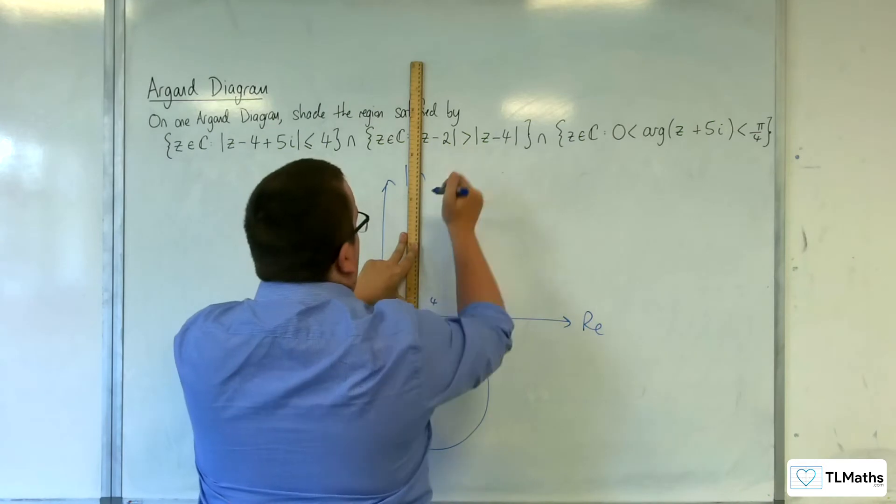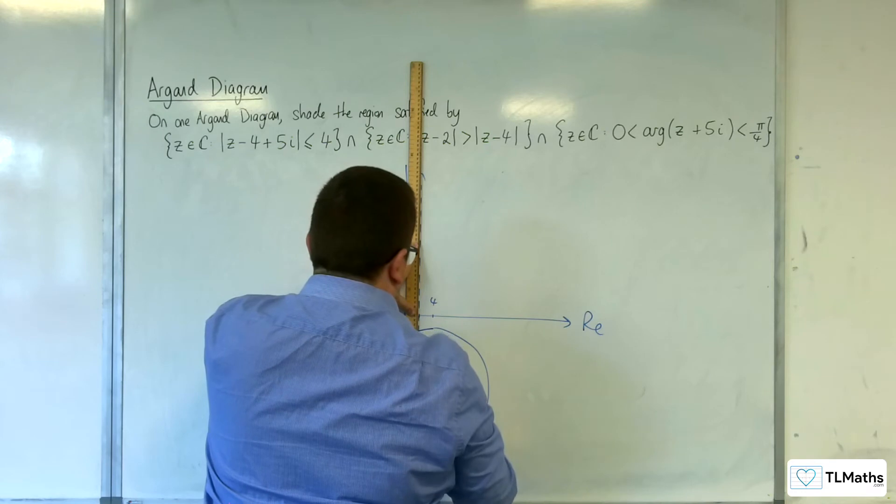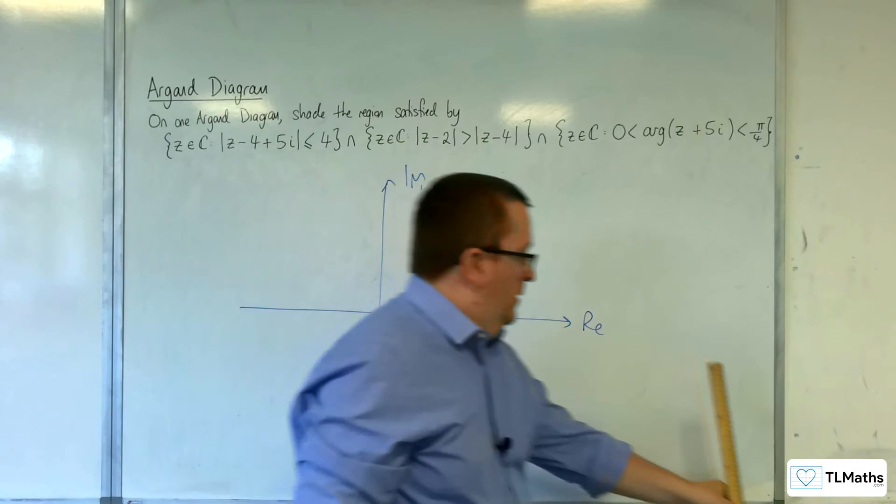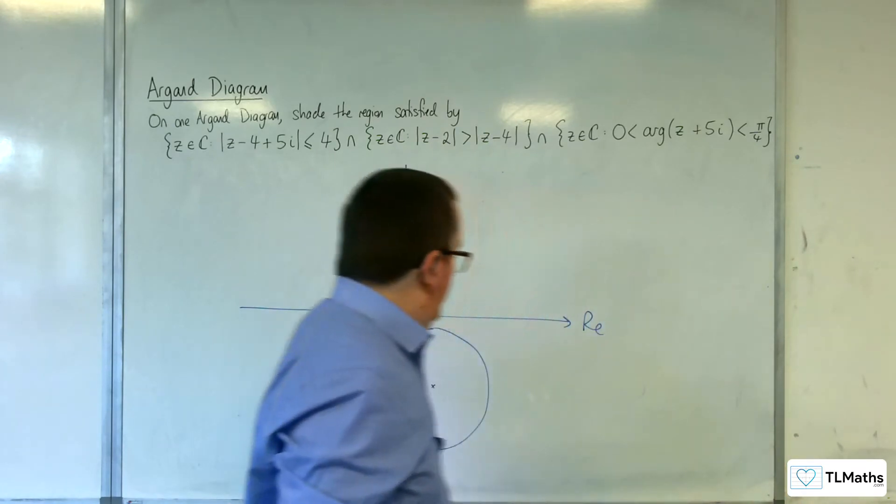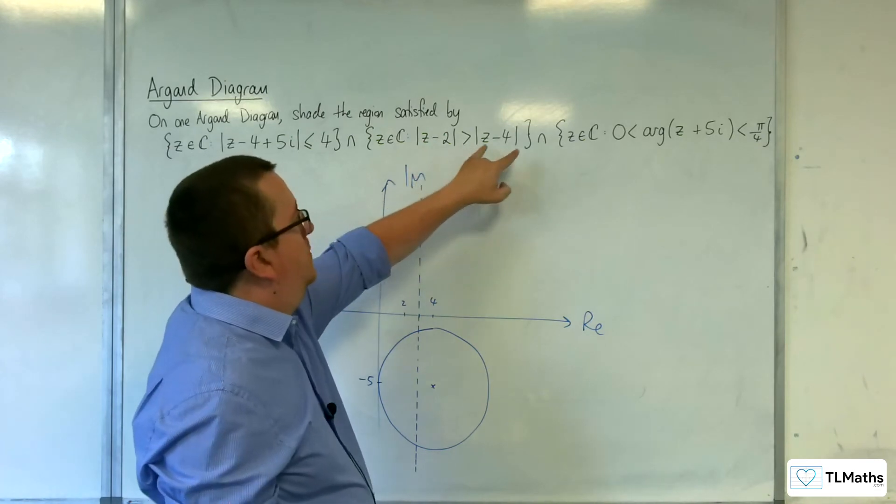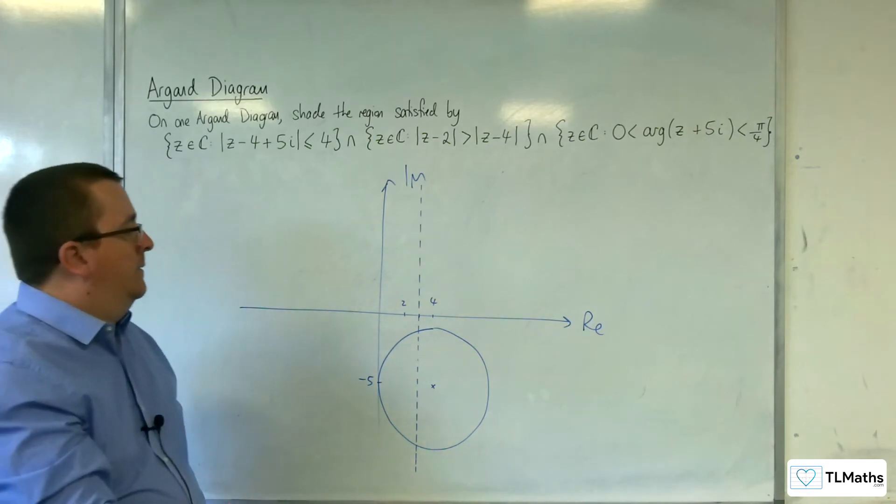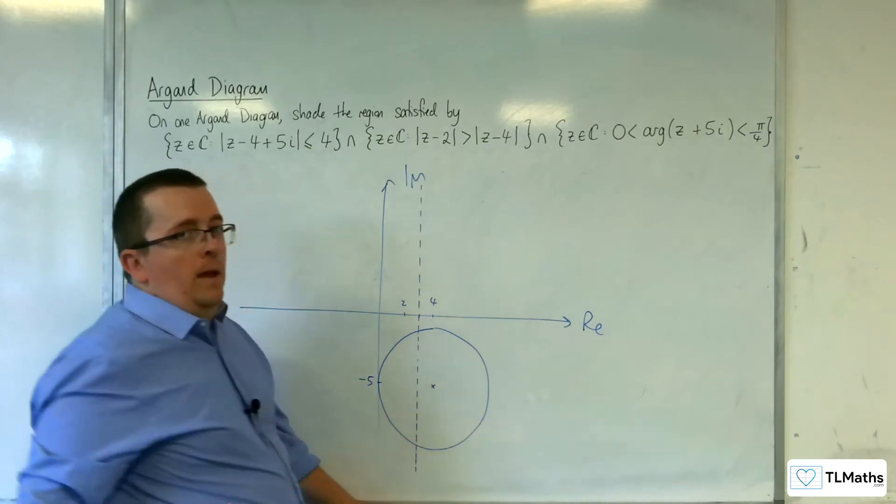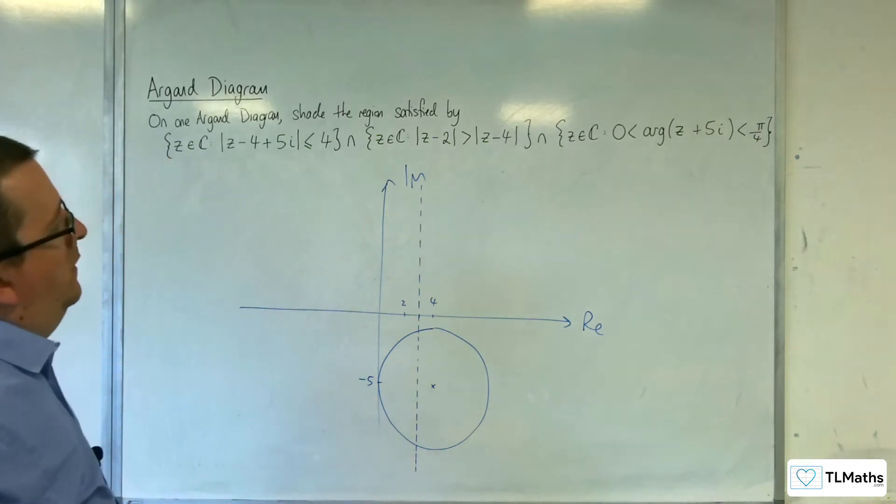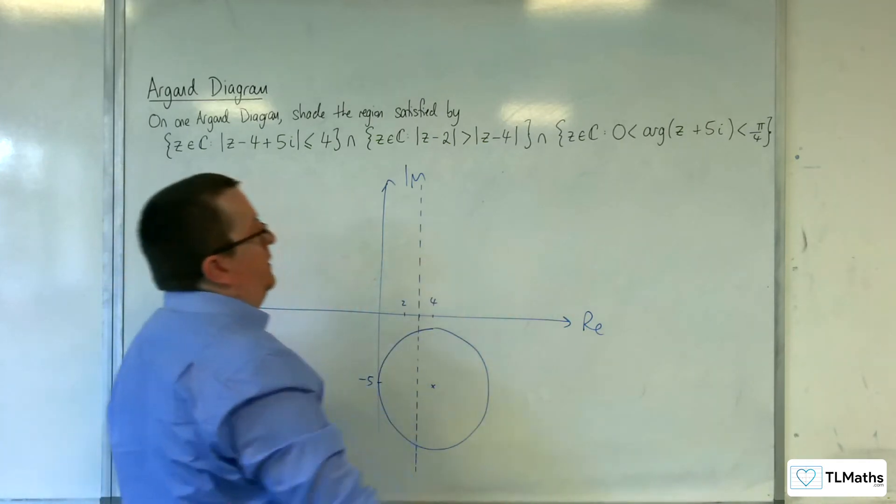And it's greater than, so it's a dotted line. Like so. Now, because we've got z take away 2 is greater than the modulus of z take away 4, that means you want the right-hand side. So, we want the right-hand side of that line to be shaded. That's the bit that we want. If it was less than, we'd be looking at the left-hand side. Because it's greater than, we're looking at the right-hand side.